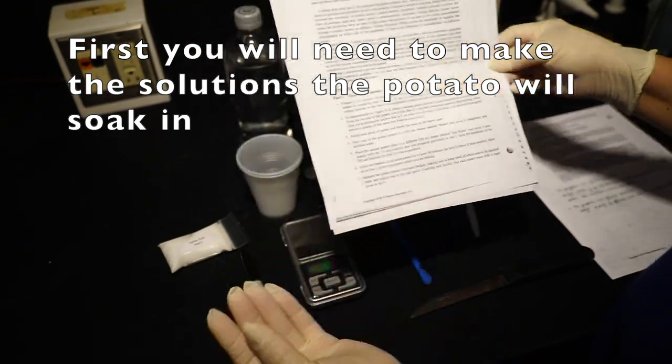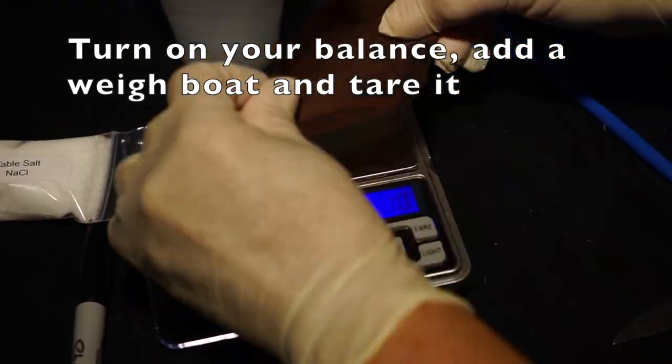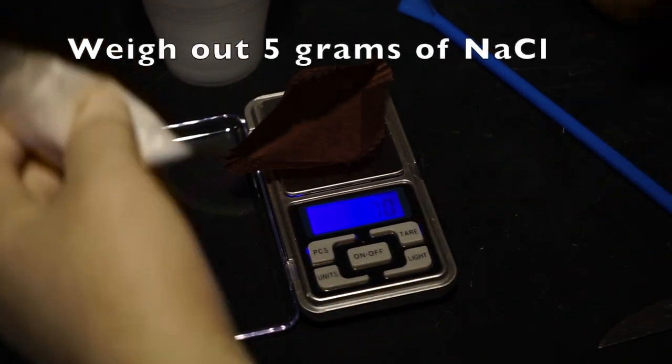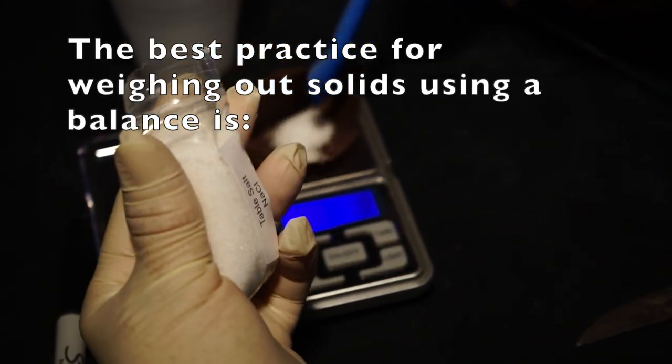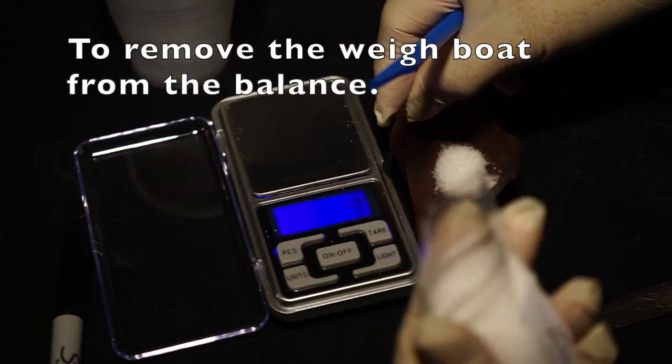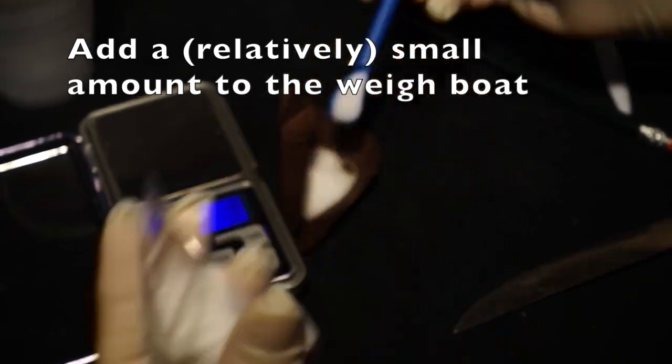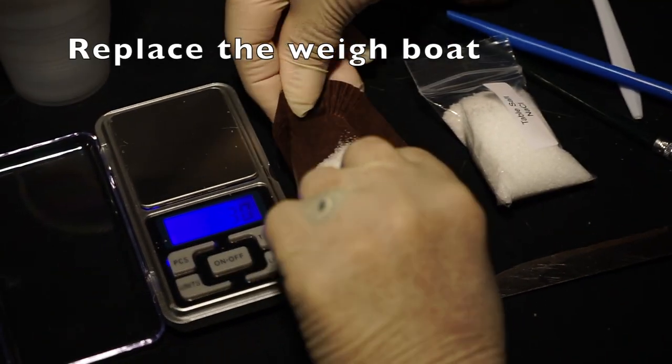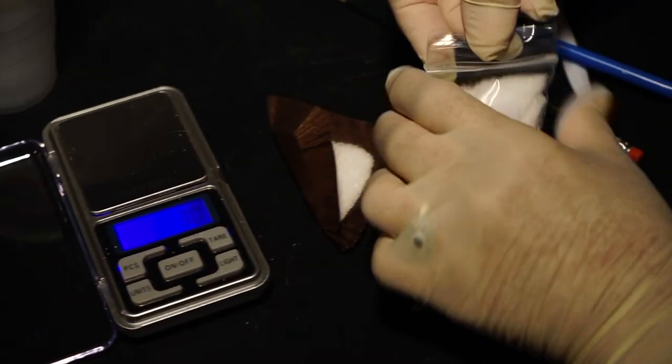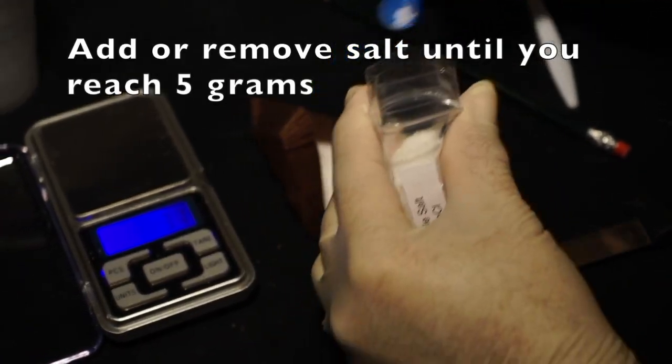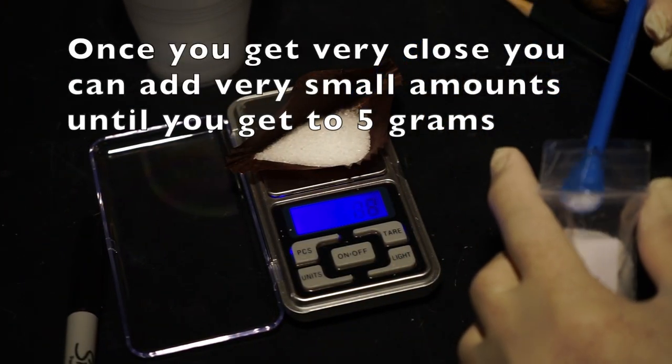First, you will need to make the solution that the potato slices will soak in. Turn on your balance, add a weigh boat, and then tare it. Next, weigh out 5 grams of sodium chloride salt. The best practice when weighing out solids on a balance is to remove the weigh boat after you have tared it. Then add a small amount of salt to the weigh boat. Then replace the weigh boat to see how much you have measured out. With experience, you can get good at estimating different weights. Continue to remove the weigh boat from the balance and then add a small amount of salt and checking the weight until you get to 5 grams.